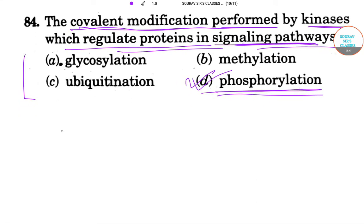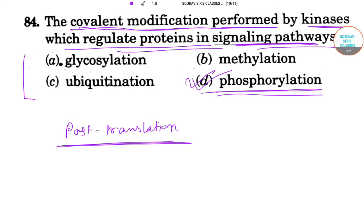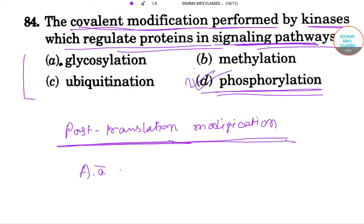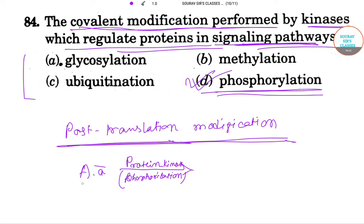After translation — also called post-translational modification — there is modification of proteins. In this post-translational modification, an amino acid residue is phosphorylated by a protein kinase.